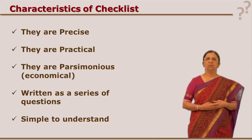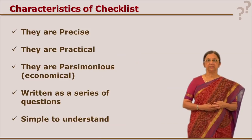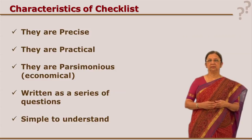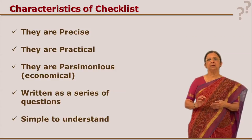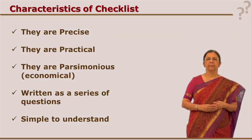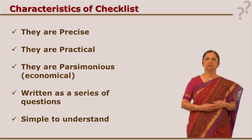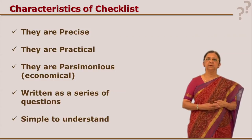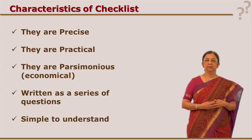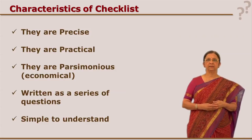Now let us see the characteristics of a checklist. One thing is that it has to be precise — we have to use words precisely so that the statements are small, understandable, and the person can mark it. So precision is one characteristic. Another characteristic is that it should be practical — practical in terms of using it: simple to understand, simple to use, and having practical value.